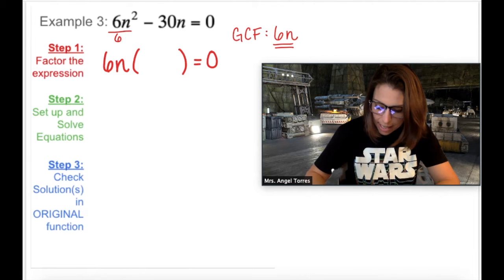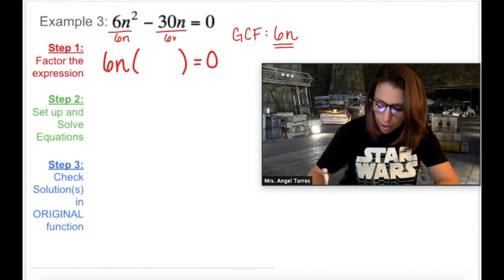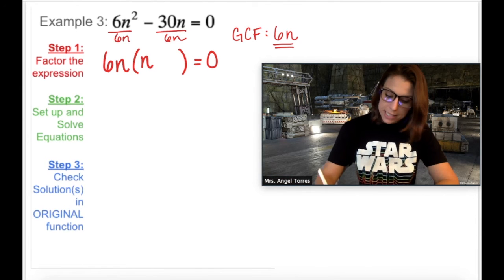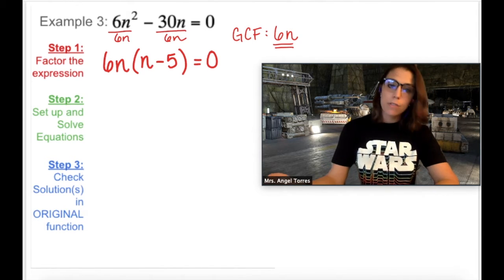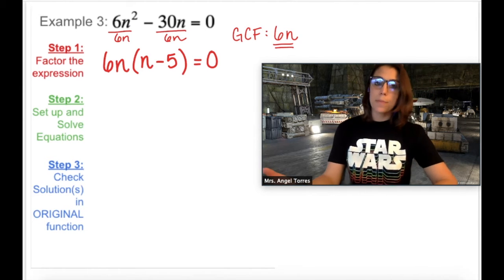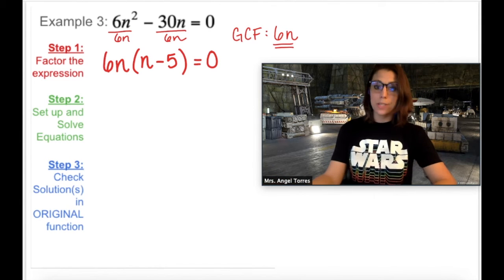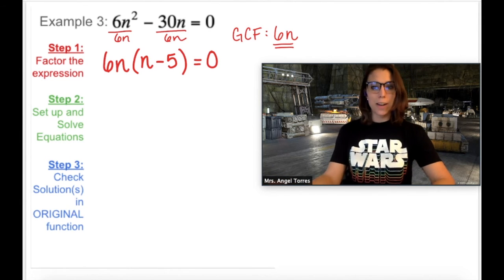Well, after I take 6n out of both of these terms, what are we left with? n and 30n divided by 6n leaves us with just 5. So now we have taken something from standard form and put it into intercept form. And from here, we can solve using zero product property. So go ahead and try that on your own.